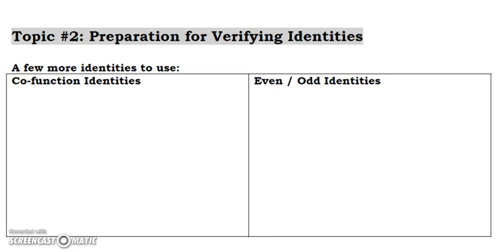Hello ladies and gentlemen. We have been talking about verifying identities. We've already covered some identities that we can use that are equivalent — for example, that sine and one over cosecant are equivalent because they're reciprocals. Today we're going to cover a few more identities. The first set are some co-function identities that we talked about way back at the beginning of the semester.